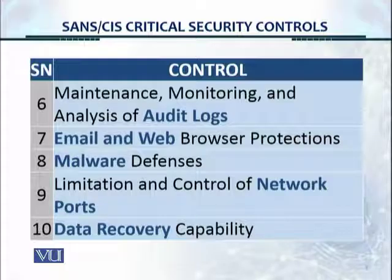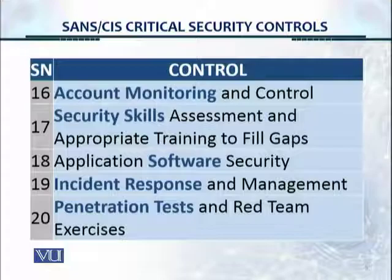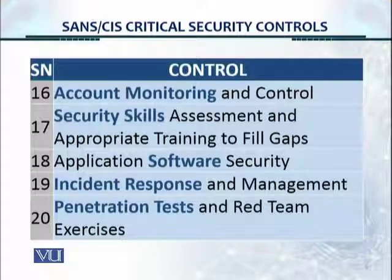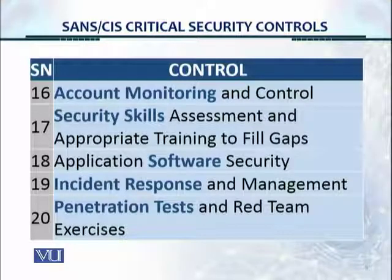Number nine is limitation and control of network ports, which comes under security hardening in our information security transformation model. Then you have data recovery capability. Number eleven: secure configurations for network devices. Number twelve: boundary defense. Number thirteen: data protection. Number fourteen: controlled access based on the need to know. Number fifteen: wireless access control. Number sixteen: account monitoring and control. Number seventeen: security skills assessment and appropriate training to fill gaps — seen in 27001. Application software security — wireless was not mentioned in 27001 because it's very generic. Software security was addressed as system acquisition, development, and maintenance in 27001. You have incident response and management, which was the incident management control set in 27001. And penetration tests are discussed here, which had no mention at all in 27001. Overall, an exceptional control set for technical controls.